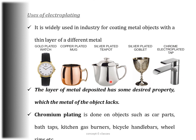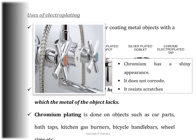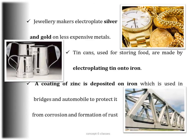In all these cases, the layer of metal deposited has some desired property which the base metal lacks. Chromium plating is done on objects such as car parts, bath taps, kitchen gas burners, bicycle handlebars, and wheels. Chromium plating gives a shiny appearance, does not corrode, and resists scratches.